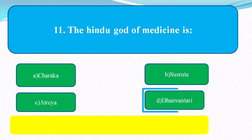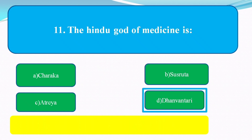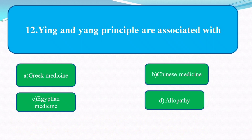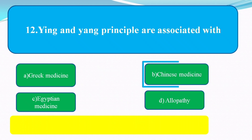The yin and yang principle is associated with which system of medicine? The options are: Greek medicine, Chinese medicine, Egyptian medicine, allopathy. The answer is Chinese medicine.